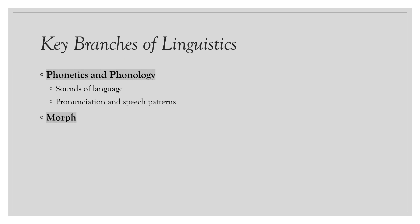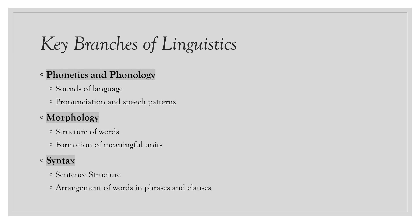The next branch is morphology. Morphology is the study of words, how they are formed, and their relationships to other words in the same language. Then we also have syntax, which studies the structure and formation of sentences. The fourth notable key branch is semantics, which focuses on the study of meaning — the meaning of words and sentences, as well as how context influences meaning.